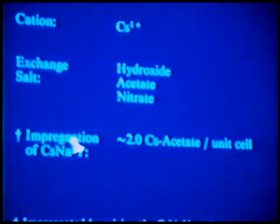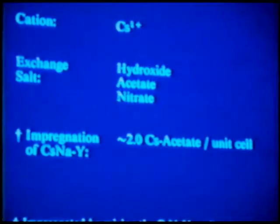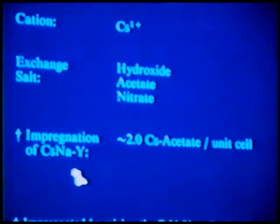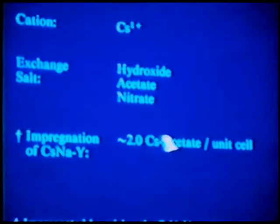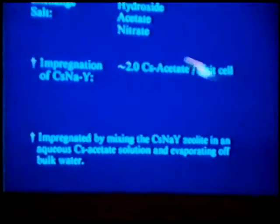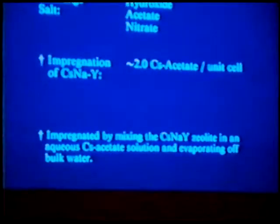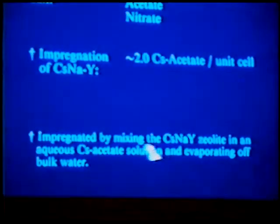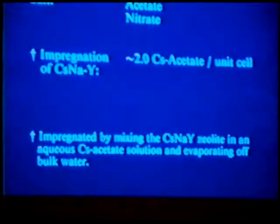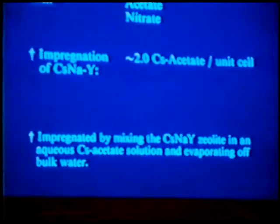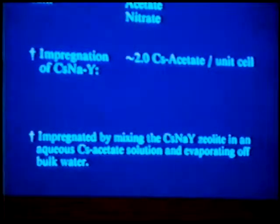One of the most important steps — what we consider to be novel in this work — was an impregnation of the cesium-Y zeolite with, on average, two acetate molecules per unit cell. The impregnation was achieved by simply mixing the Y zeolite in an aqueous solution of cesium acetate, then evaporating off the bulk of the water using a rotovap preparation.